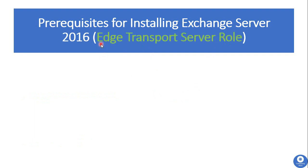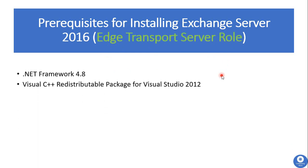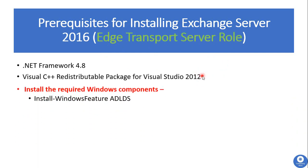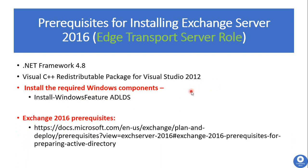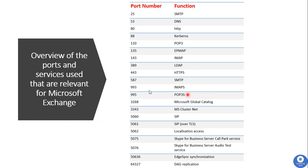Now we will see the required prerequisites for installing the Edge Transport Server role. We need just two software and one Windows component. As this server role is installed on a non-domain-joined machine, we don't need the other Windows components. You can download this software from the provided URL, and more details are available on the Exchange 2016 prerequisites page. All the listed ports are required to be open in Microsoft Exchange Server 2016 for better communication and to avoid performance issues.